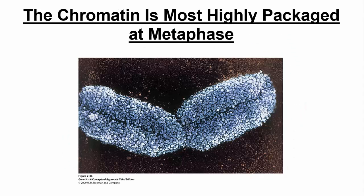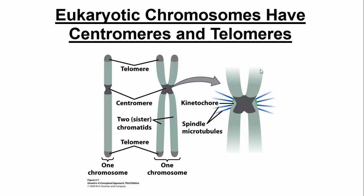Chromatin is just a different name for DNA — usually people call DNA chromatin when talking about DNA that's in interphase. It's mostly highly compacted at metaphase, so when you see these compact chromosomes, you're looking at metaphase chromosomes. Eukaryotic chromosomes have centromeres, where the DNA is highly condensed, sort of at the middle of the chromosome. They also have telomeres at the ends, which help protect the integrity of the chromosomes.